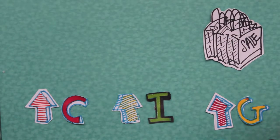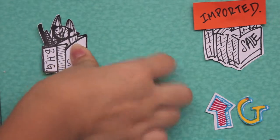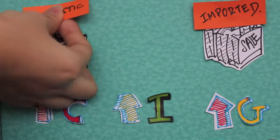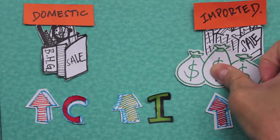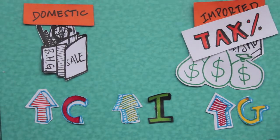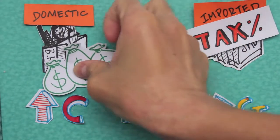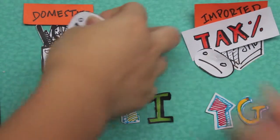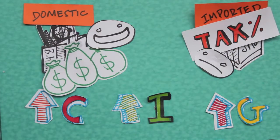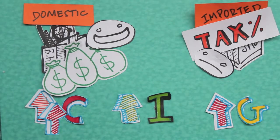Another way for fiscal policy to work is where it affects imported and domestic goods, through taxing imported goods. Usually, people with purchasing power would choose imported goods over domestic goods. However, when we tax imported goods, people are more likely to purchase domestic goods over foreign goods. This increases the consumption function of AD yet again, by redirecting the money into the domestic economy.